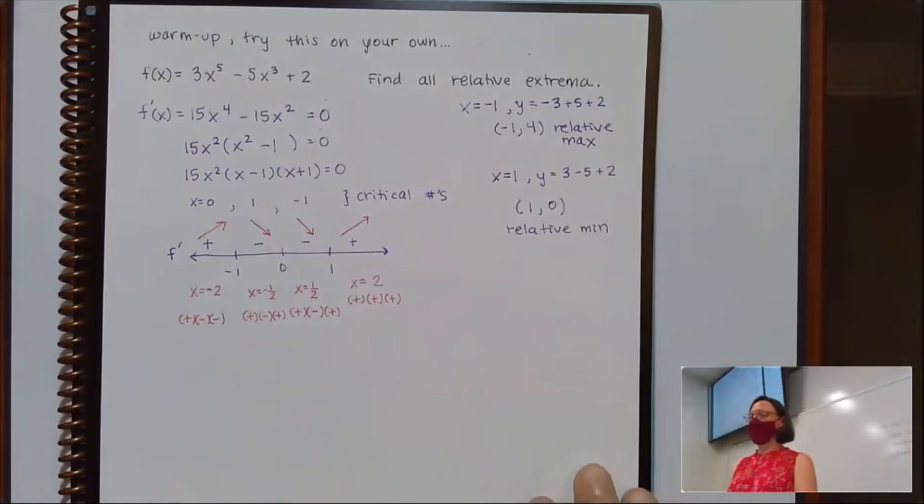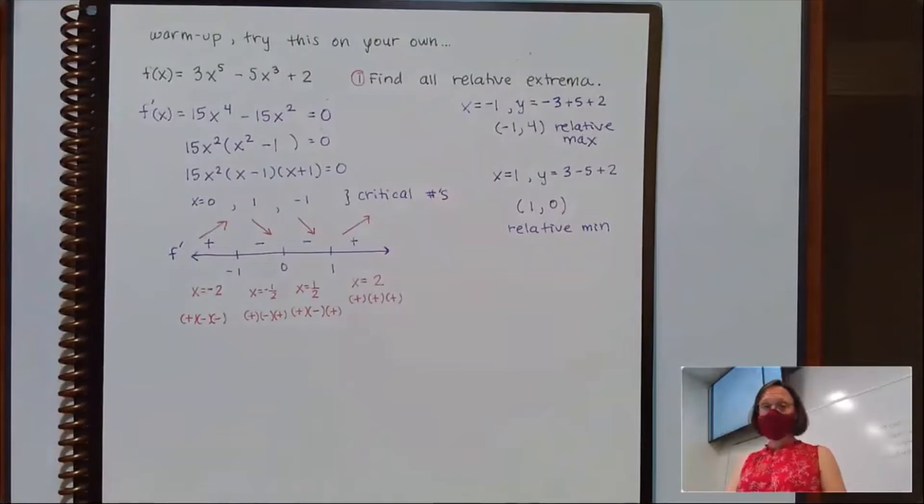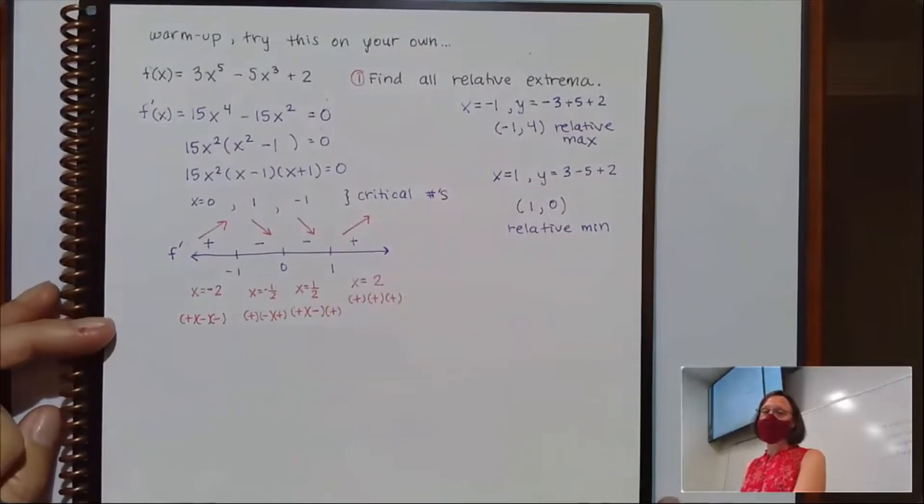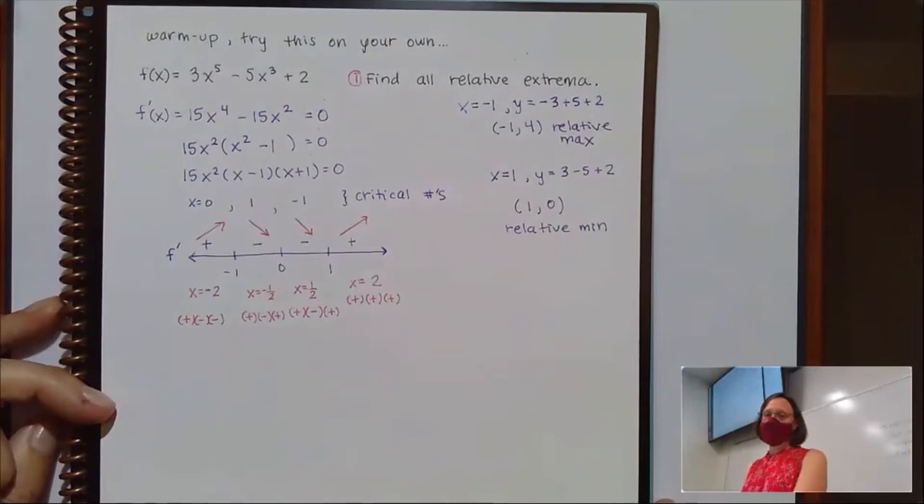I'm going to pause there for a second in case there are questions. And then I'm going to ask like 12 more things about this function. Not seeing questions in the chat, but if something occurs to you, you can always put it in there. Other questions we might be asked, right? So here, I asked us to find all relative extrema. Maybe another question that we would get asked. So more things.